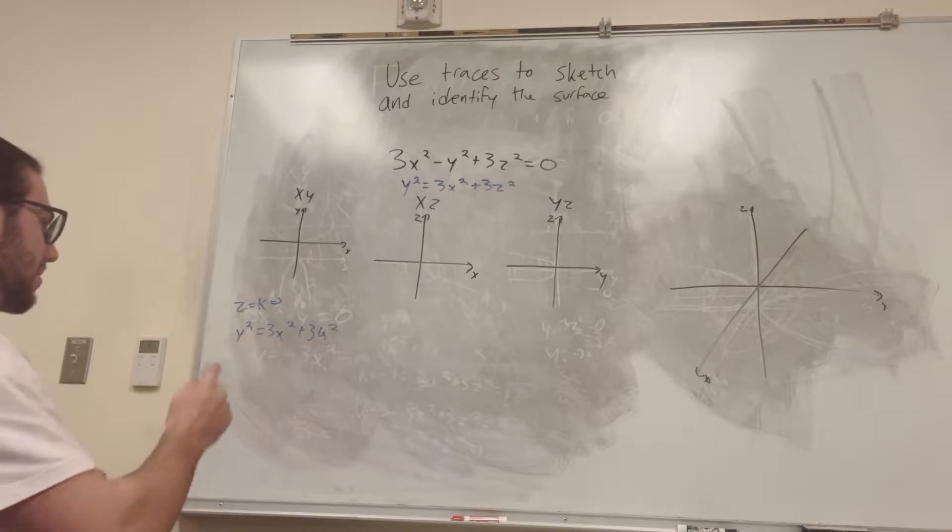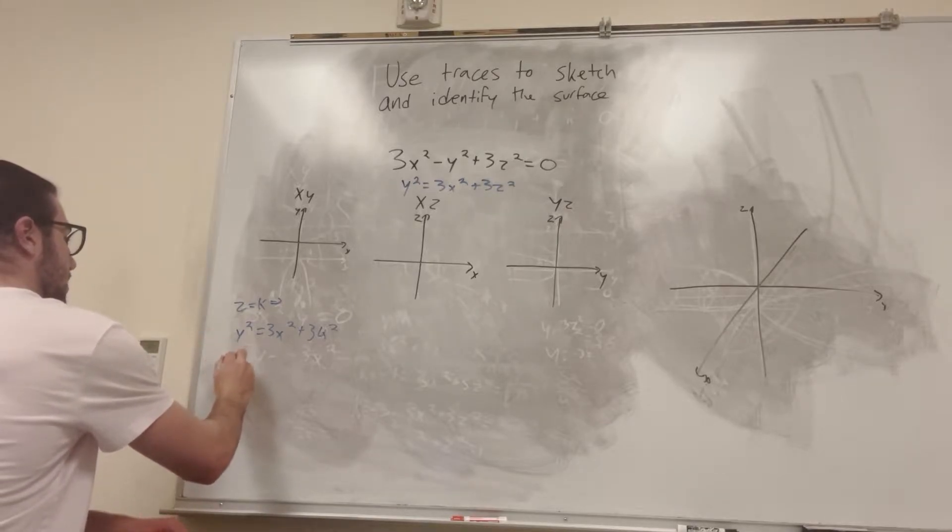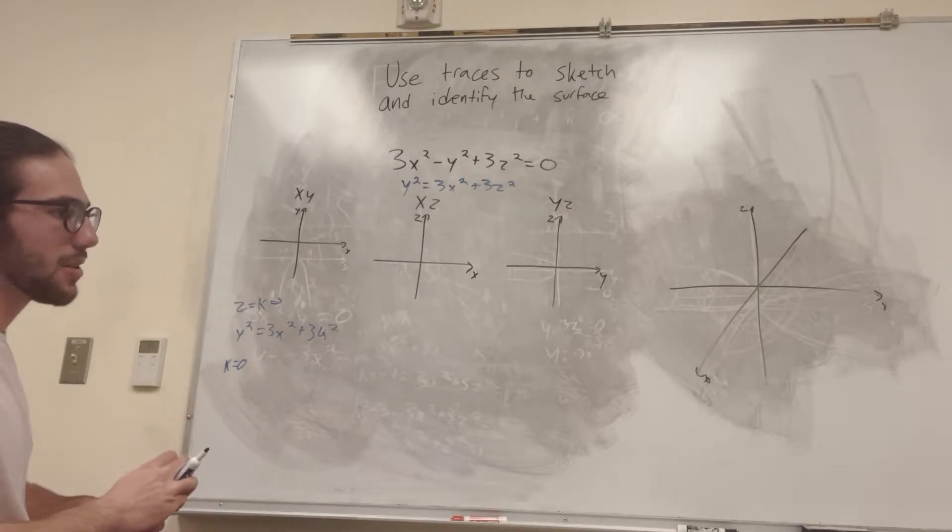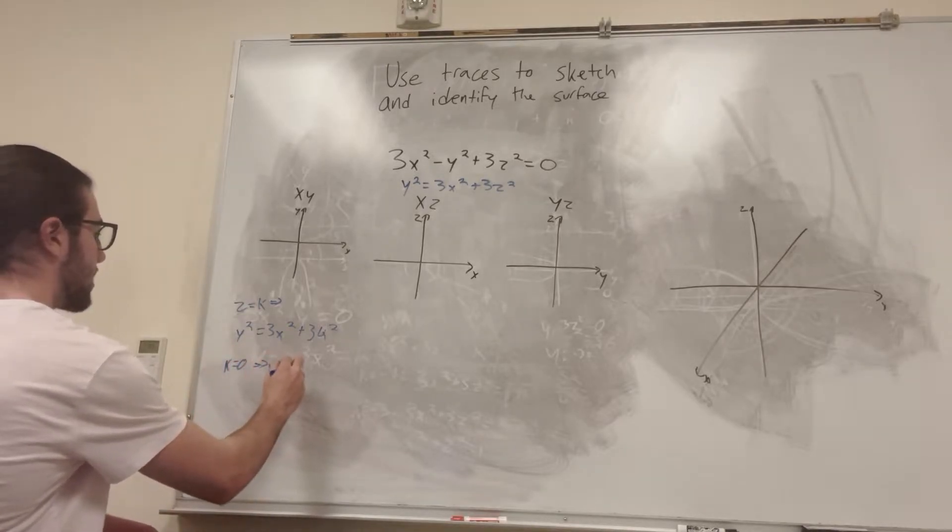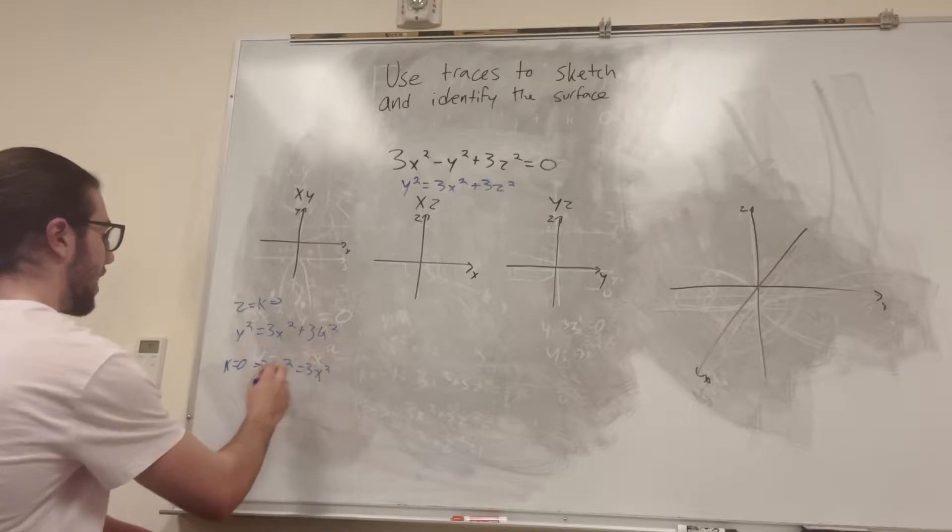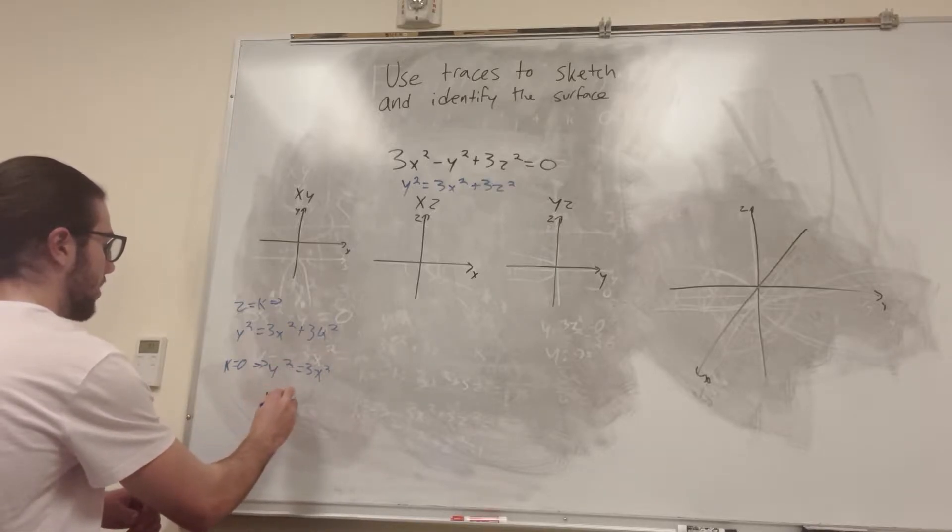Well, let's just say k is equal to zero for now. When k is equal to zero, that means that z is equal to zero, and that's just perfectly on the xy plane. So there we have y squared is equal to 3x squared. And if we take the square root of both sides, we get y is equal to positive or negative square root of 3x.